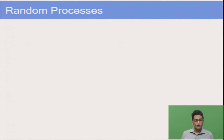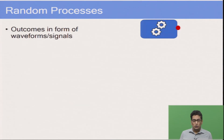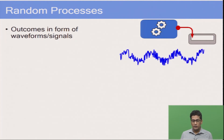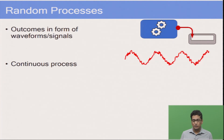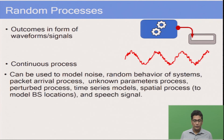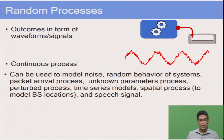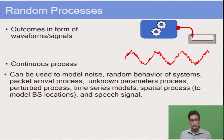Another object we will study later in the course is the random process. In many cases the outcome does not correspond to just one number but a complete waveform. Suppose you have a system with an output: every time you measure it, you get a very different waveform. Such processes can be modeled by random processes. This is a continuous waveform in time, and such processes can model noise, random behavior of systems, and different engineering applications like packet arrival processes, base station location, time series models, and speech signals.